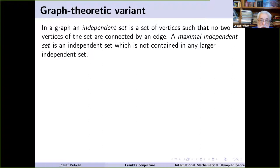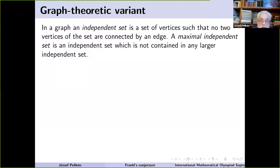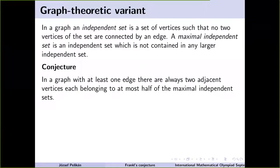An independent set is a set of vertices such that the subgraph spanned by them is the empty graph. A maximal independent set is an independent set which is not contained in any larger independent set. Note that maximal independent does not mean it is large in number of elements, but that it's not contained in any larger one. Now comes the conjecture: in a graph with at least one edge, there is always a vertex belonging to at most half of the maximal independent sets.